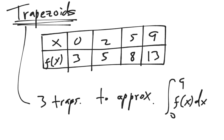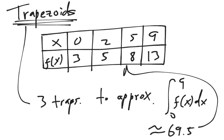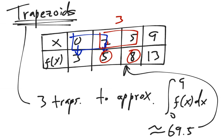For those who want an expert-level approach, you don't have to draw the picture — you can do it straight from the chart. Interval one: base is 0 to 2, so base = 2; height one is 3, height two is 5. Second interval: 2 to 5, base = 3; height one is 5, height two is 8. Last interval: 5 to 9, base = 4; height one is 8, height two is 13. Then just write it all down and calculate.